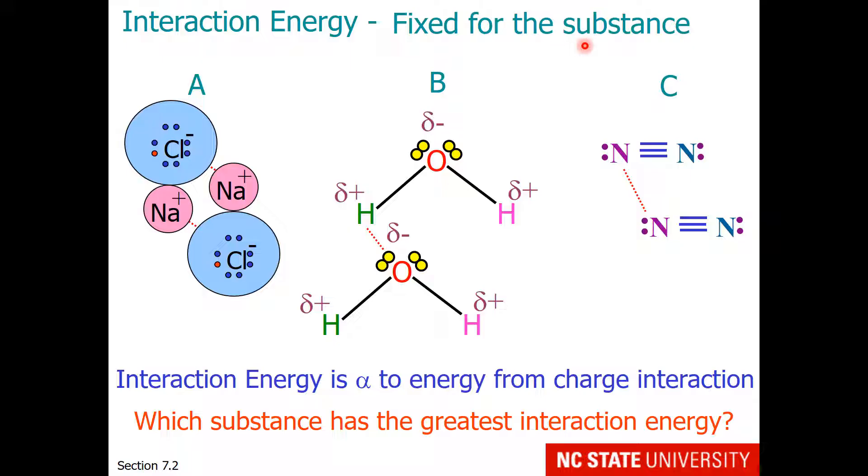Interaction energy is fixed for a substance, and if you think back to Coulomb's law, it's actually proportional to charge interactions. The larger the charge is, the greater the interaction energy. So what I have here is sample A, which is sodium chloride. The sodium has a full plus 1 charge, and it's attracted to the full minus 1 charge on the chloride ion belonging to a different unit of the compound. B is water and the interactions between water. So we have a partial positive charge of hydrogen attached to a partial negative charge of oxygen. C is a sample of nitrogen, the most common component of our atmosphere. You notice that this nitrogen does not have any indication of a charge, nor does this nitrogen.